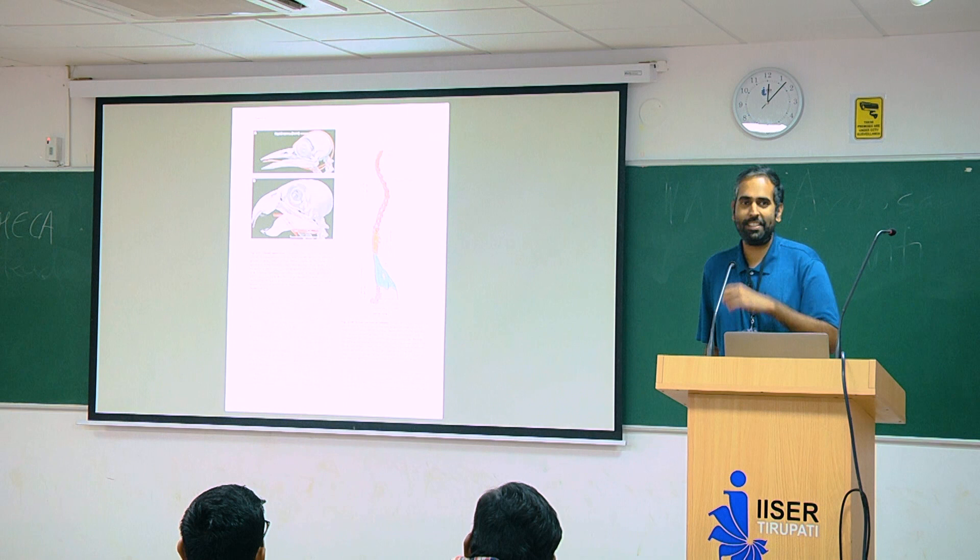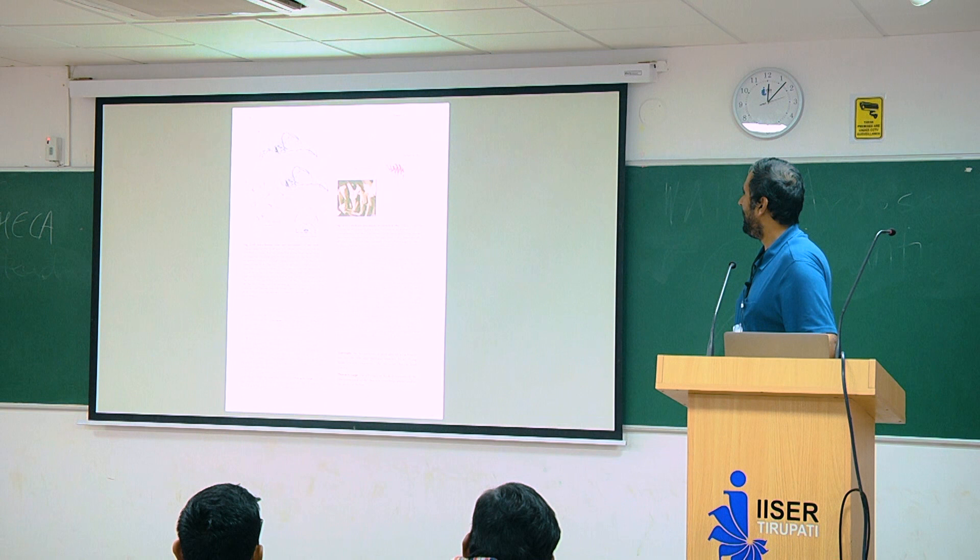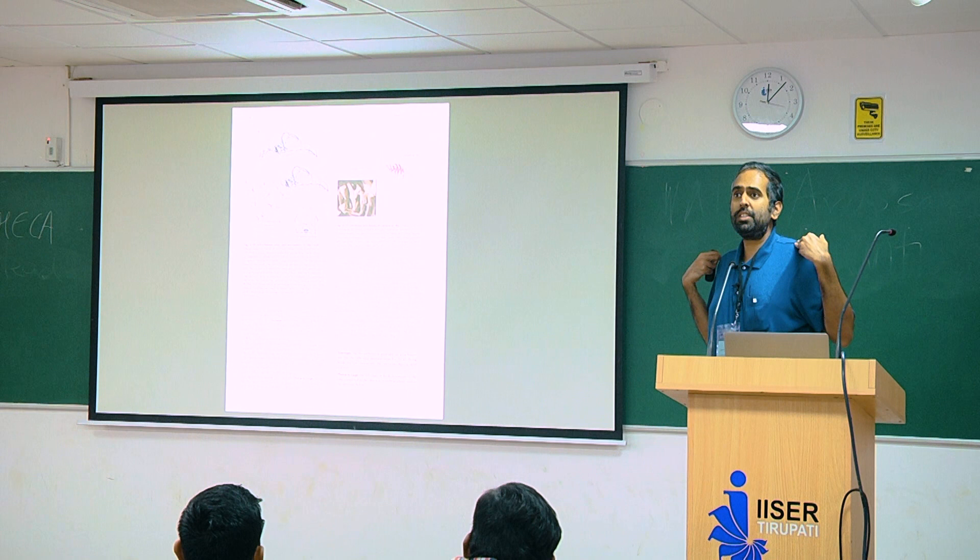The axial skeleton has bones that connect to it — we have the ribcage that protrudes and connects to the vertebral column at one end, and the sternum at the other.